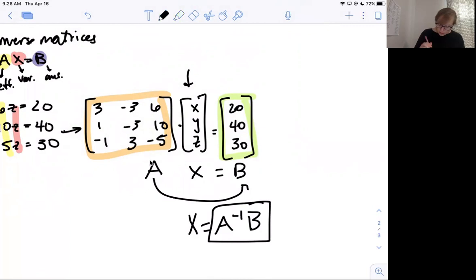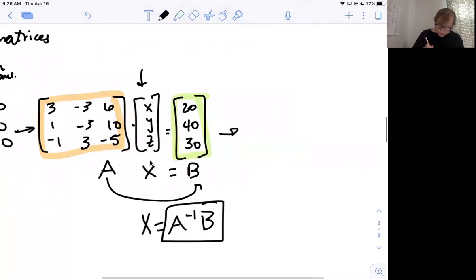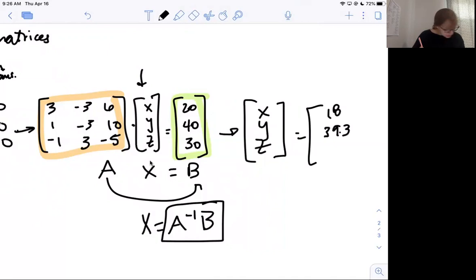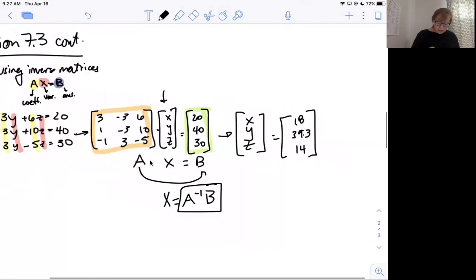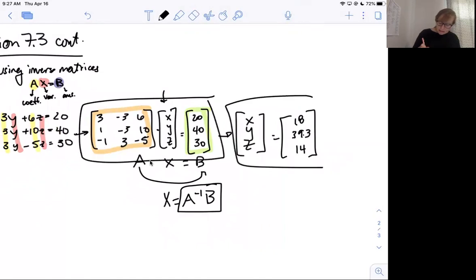You can literally type those in the calculator. You can make matrix A look like this, matrix B look like this, and type in the letters A raised to the negative first B, and then you can solve. I'm going to let you do that on your own. If you do that, your answer would be X, Y, Z equals 18, 39.3, and 14. You often don't get pretty numbers. If I ask you to solve matrix form, I expect to see this and then your answer.